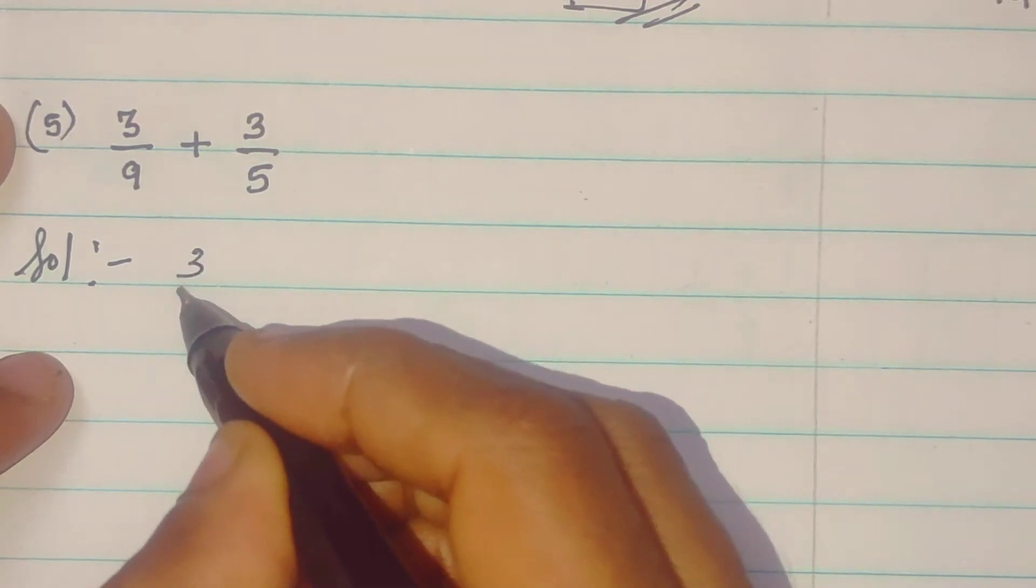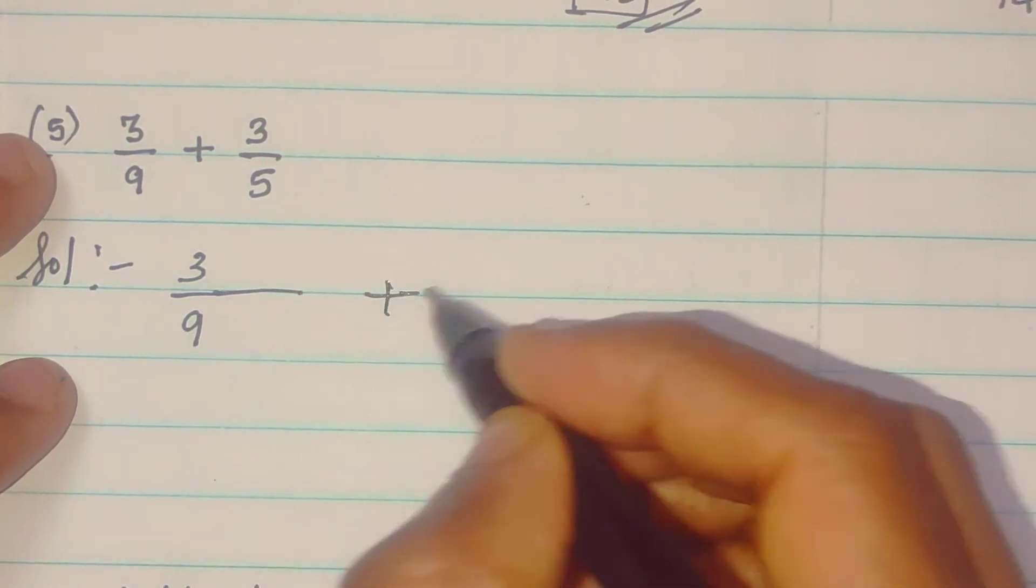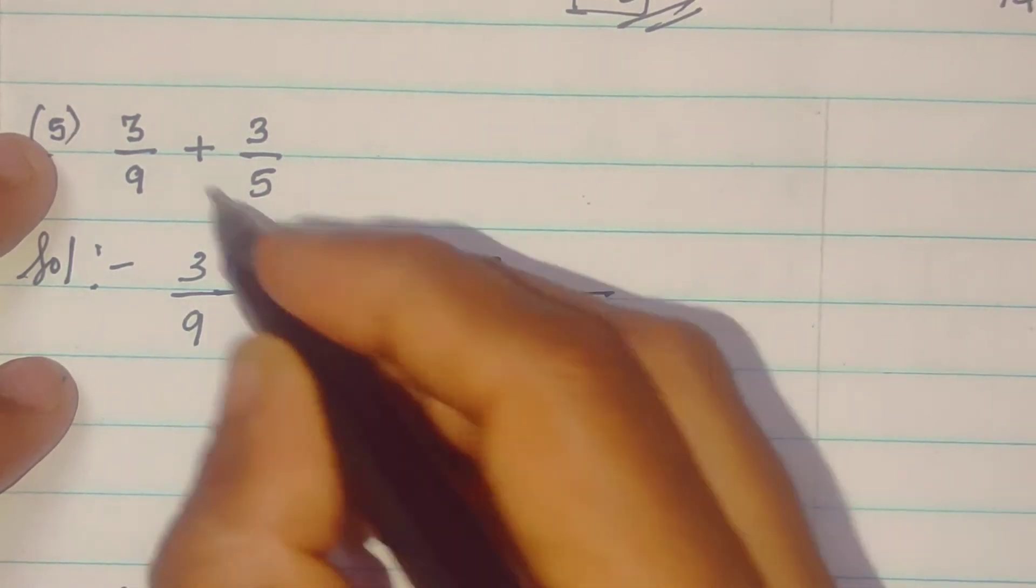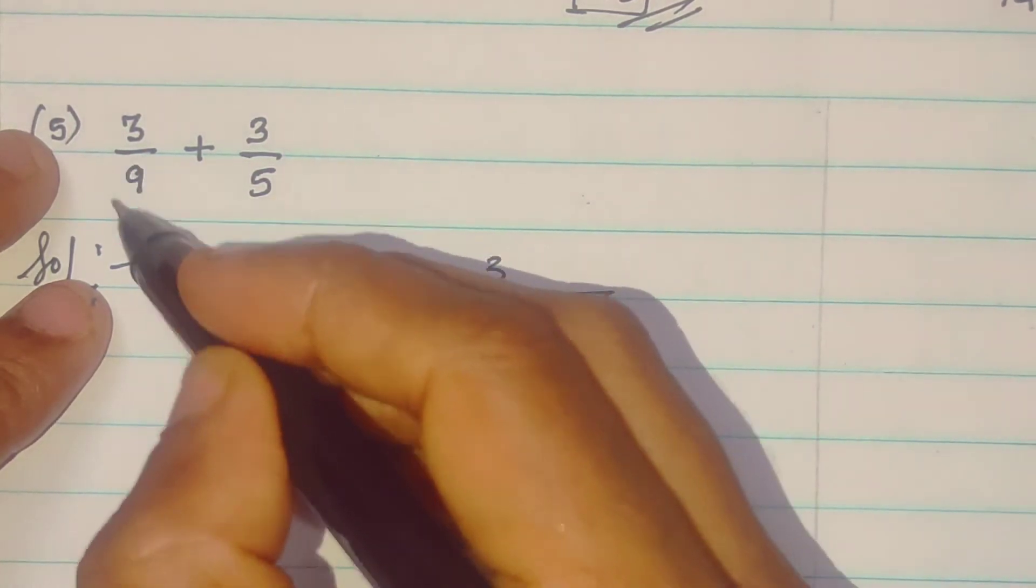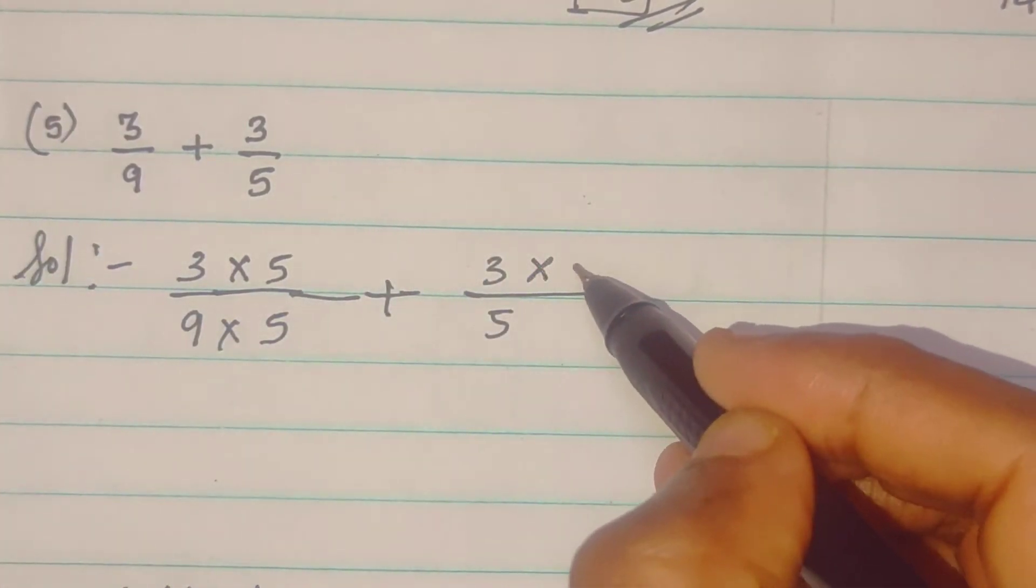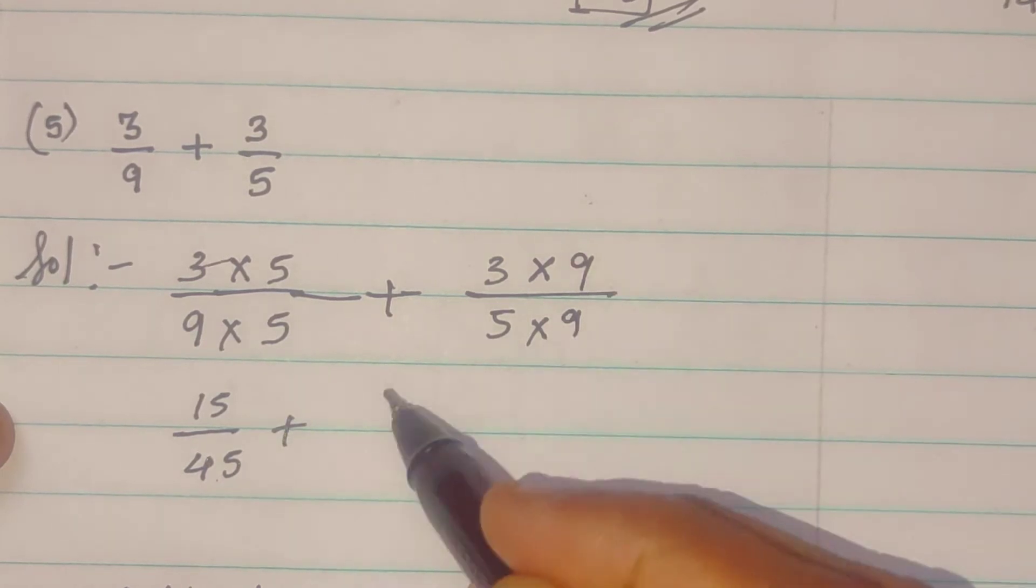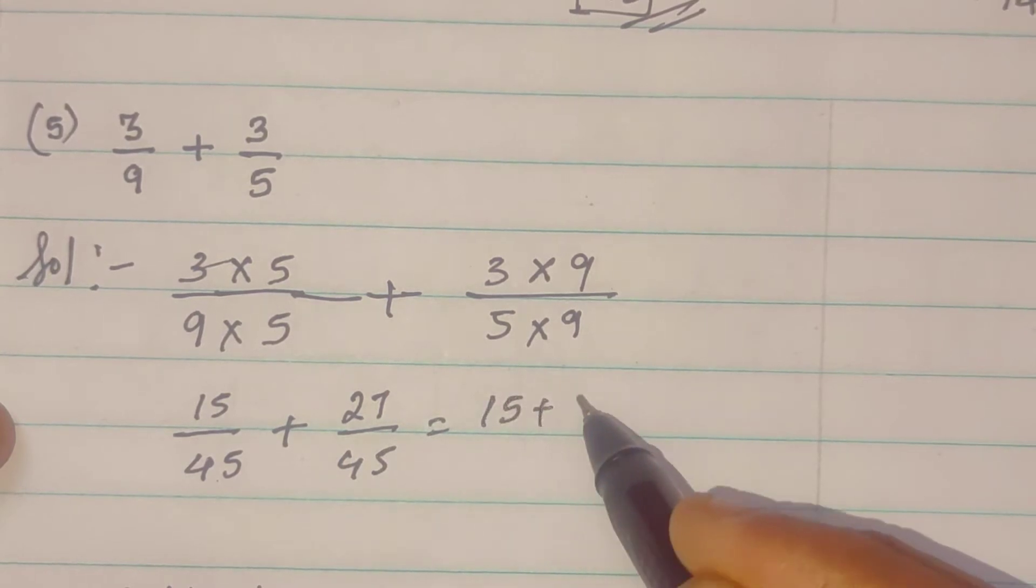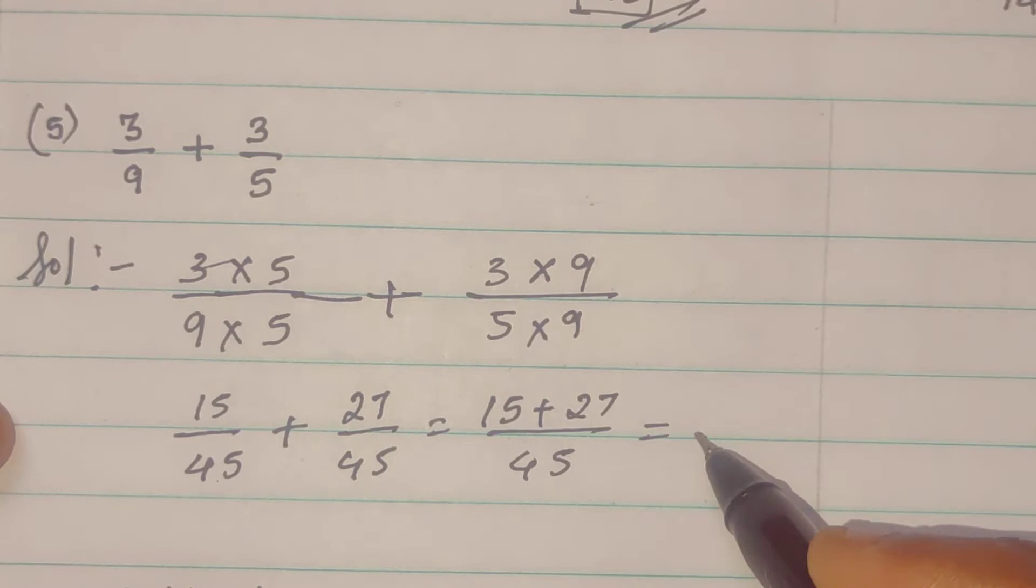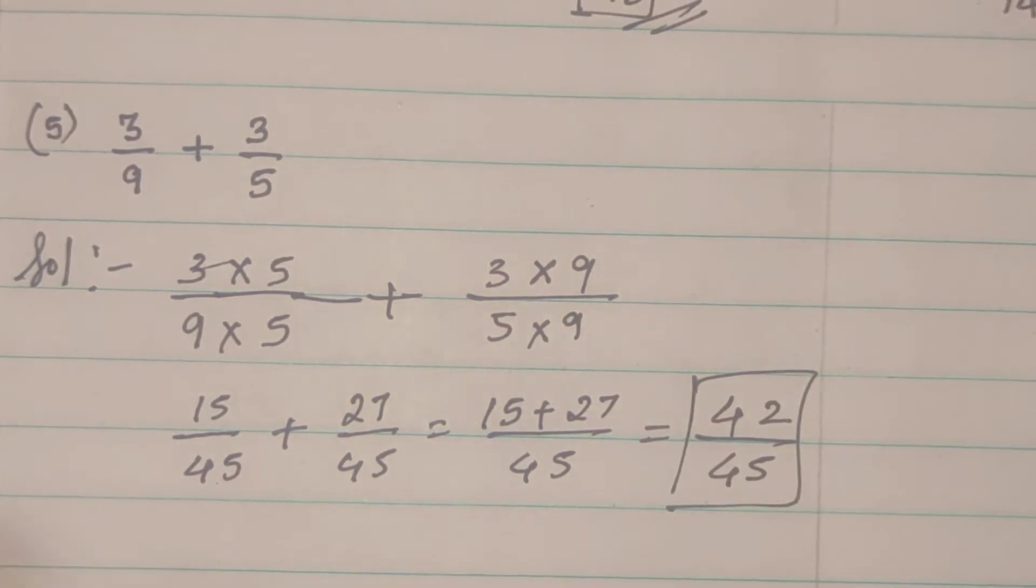So, again, both the denominators are unequal. So, what we will do? Cross multiplication. See, yeh fraction, yeh fraction, yeh fraction like. Ab yehaan ka jo denominator mein 5 yeh, wo idher aega. A denominator ka jo 9 yeh, wo iske paasa aega. So, 3 5 za 15 upon 5 9 za 45. So, 15 plus 27 upon 45. So, 7 plus 5, 12. 1 carry 4. 42 upon 45. This is the answer.